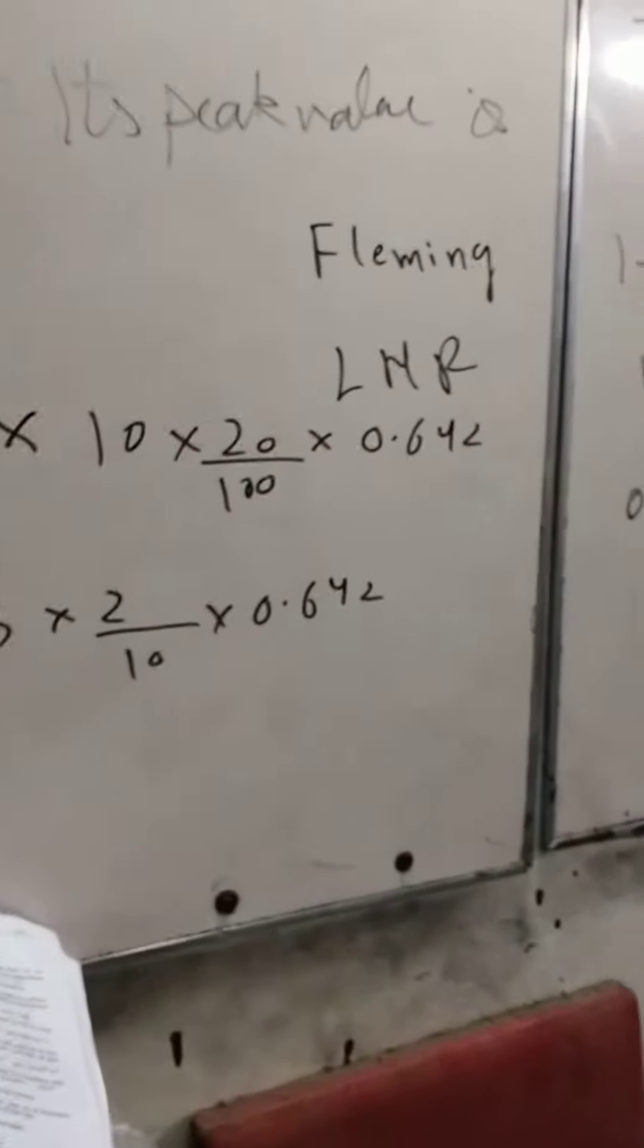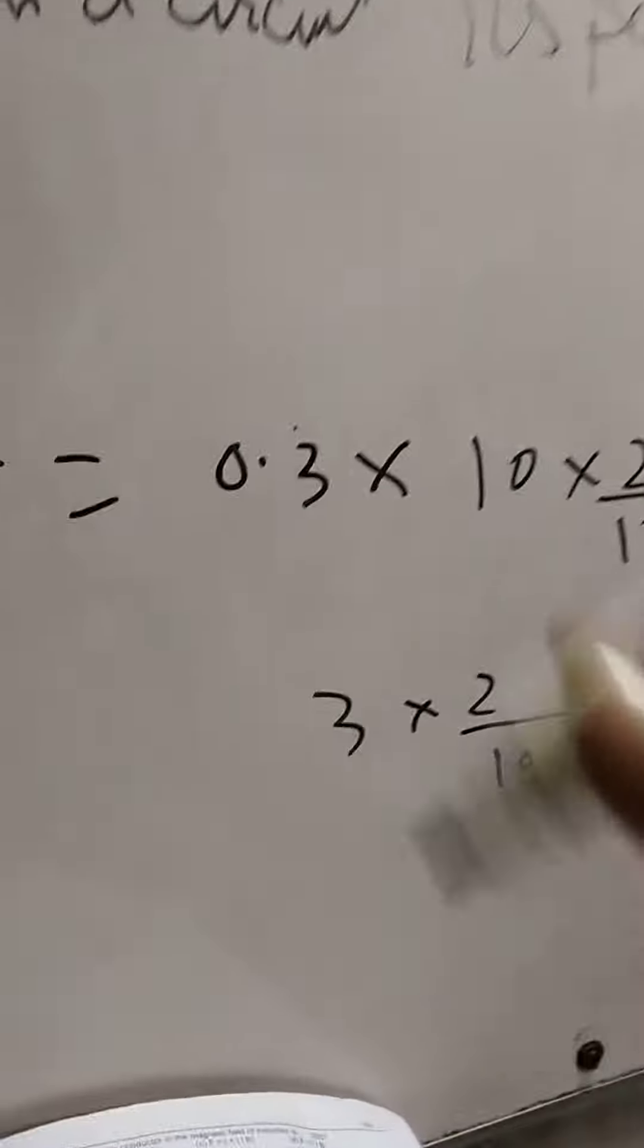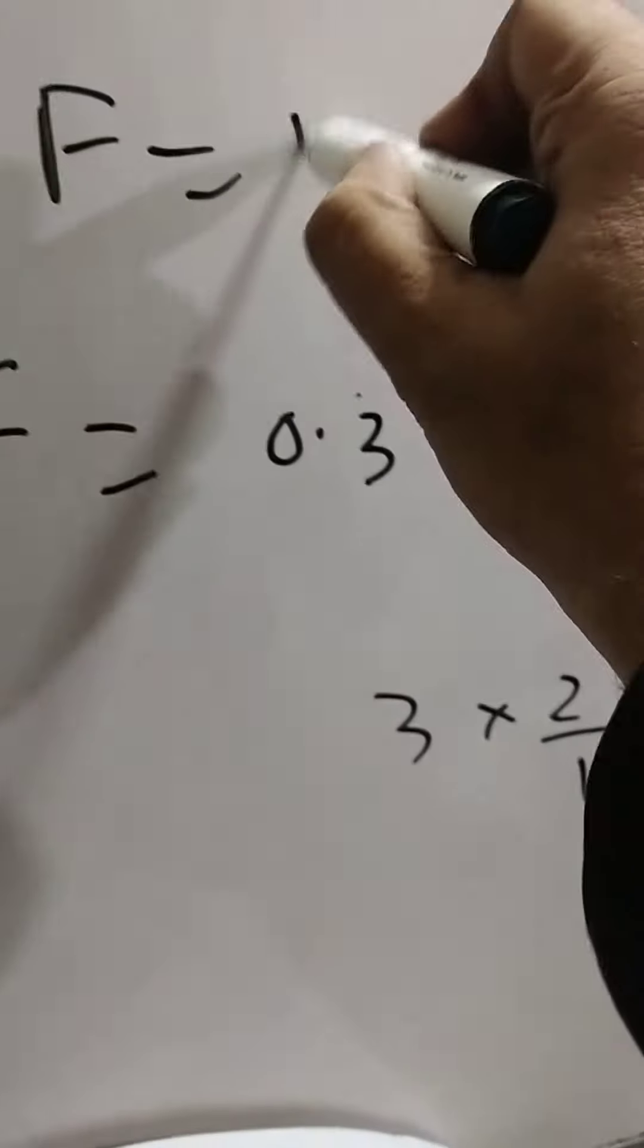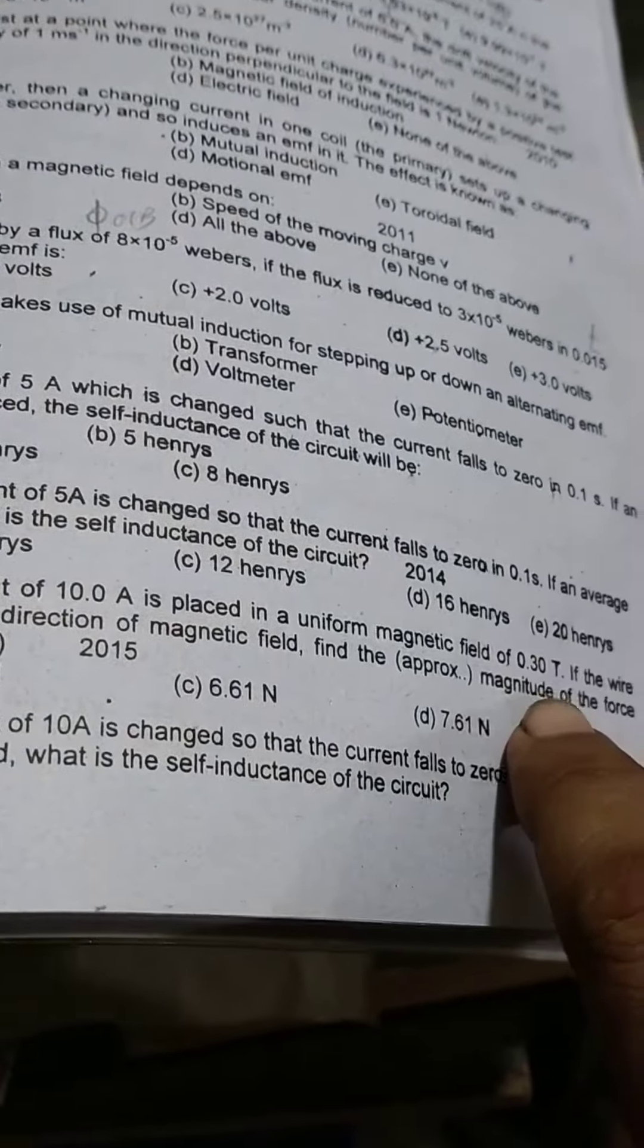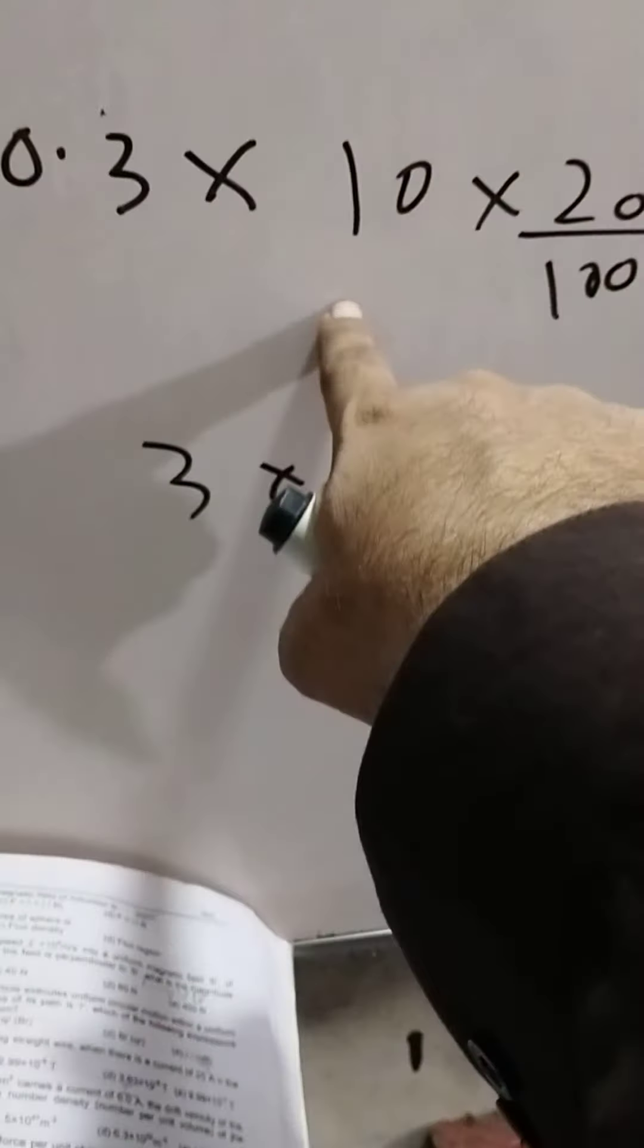2015 mein yeh aaya tha, bahut important. So mere bhai, Fleming's left hand rule ke tahat F barabar kiske hota hai bhai? B, 0.3 tesla diya gaya hai, aur current 10 ampere yeh likh diya.